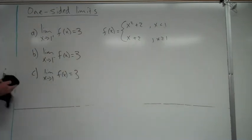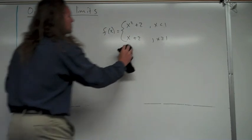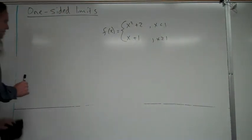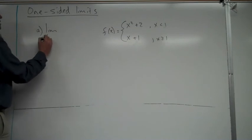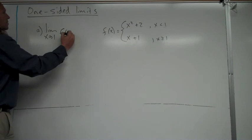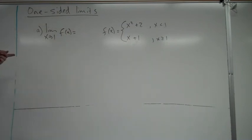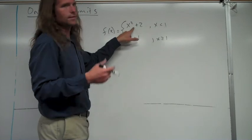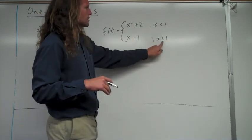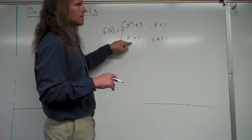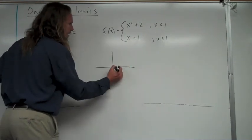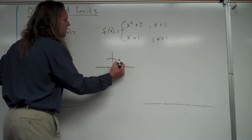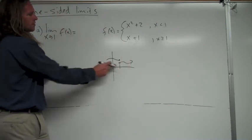Let me change the piecewise function slightly — instead of x plus 2, make it x plus 1. Now looking at the limit as x approaches 1: from the left, using x squared plus 2 with x less than 1, I plug in 1 and get 3. From the right, using x plus 1 with x greater than 1, I plug in 1 and get 2. I have two different values — 3 and 2 — so the limit does not exist.